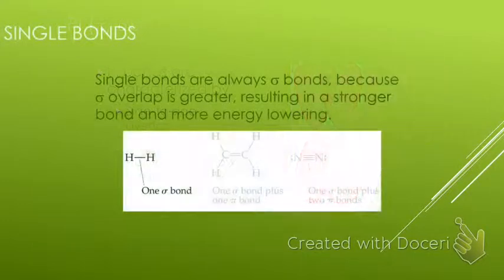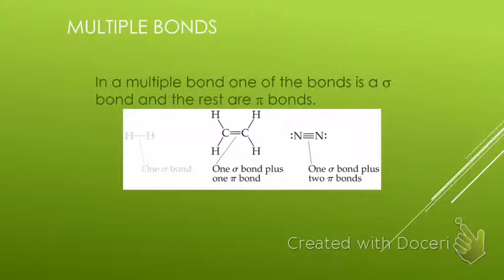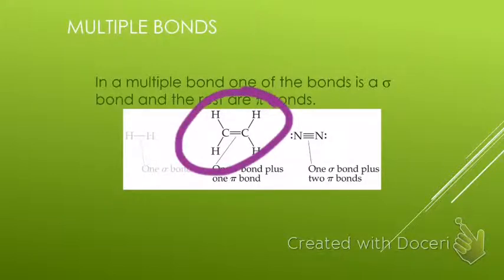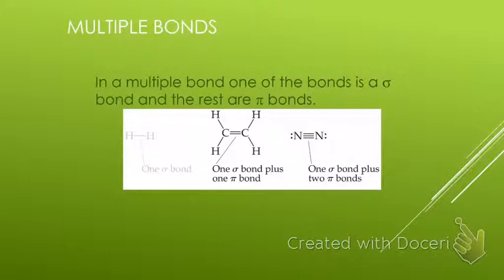Now, whenever we discuss single bonds, there are almost always sigma bonds, and that's because the sigma overlap is greater, so there's a stronger bond and more energy in it. That being said, whenever there's multiple bonds, one of the bonds is always going to be a sigma bond, and the rest of them are going to be pi bonds. That's why, as I was mentioning in class last week, every time that you see a double bond, one is going to be a sigma and one is going to be a pi bond. Whereas if you have a triple bond, we have one sigma and two pi bonds.